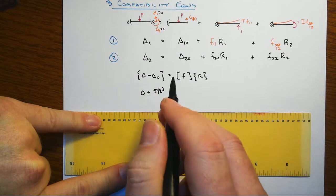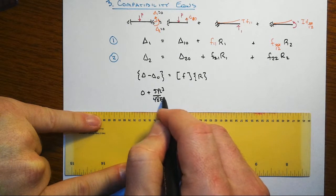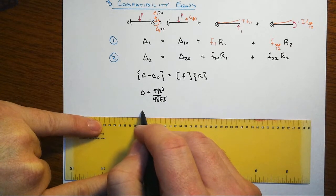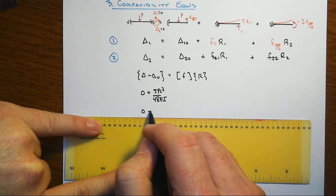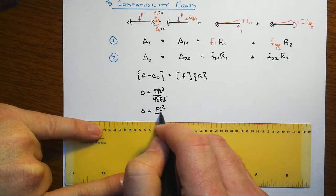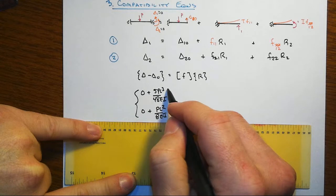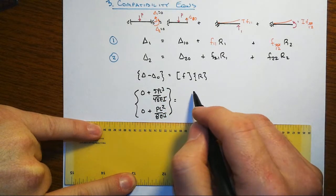And then the second one would be zero minus a negative PL squared over 8 EI. And then that will equal this flexibility matrix.